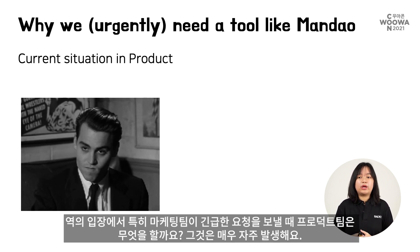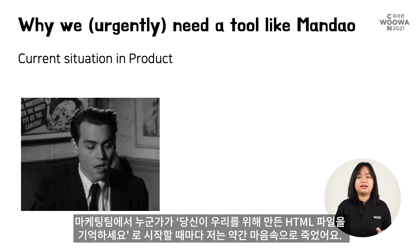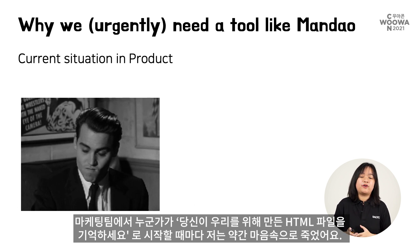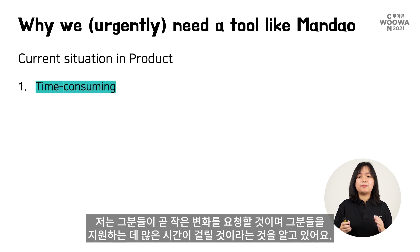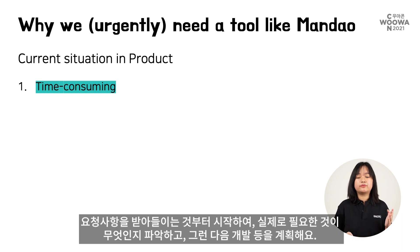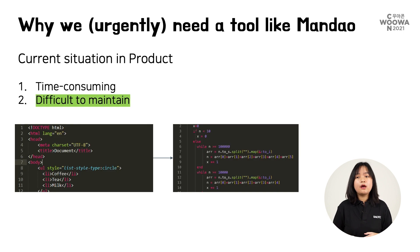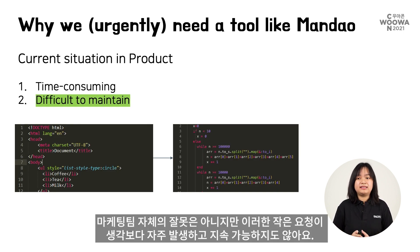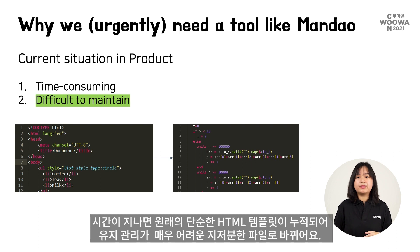On the other side of the coin, what does the product team have to do in this situation — especially when marketing sends in their last-minute requests, which happens very frequently? Whenever someone from the marketing team starts with 'remember that HTML file you made for us,' I die a bit inside. I know they are about to ask for small changes that will take a lot of time to support. Starting from listening to requests, figuring out what they actually need, then planning for development, and so on. Such small requests happen more frequently than not, and they are not sustainable. Over time, they accumulate and turn the original simple HTML file into a very messy file that is very difficult to maintain.